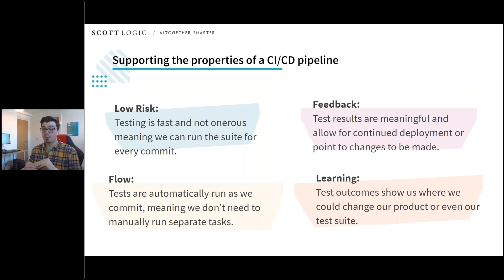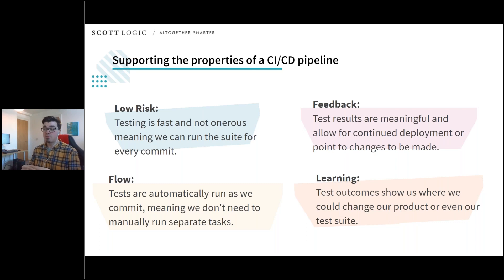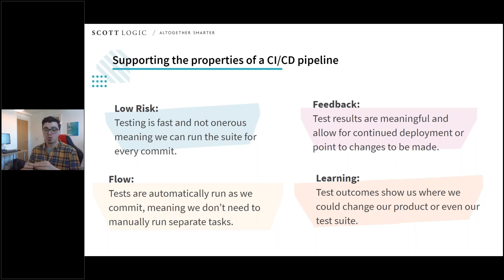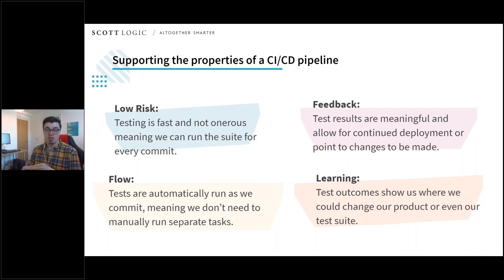The ways that continuous testing supports the CI/CD pipeline: for low risk, having fast and automated tests means we're happier to make more changes rather than trying to batch them up, and those smaller changes are less risky to implement. Continuous testing provides faster feedback, giving meaningful point-in-time information about our build so we know when to act. It also keeps up our development flow — there are no extra steps to check for regression, and fast feedback loops mean information is timely and relevant, freeing us up to work on other things. Finally, having strong tests in place gives us a safe, low-risk environment in which to try out ideas and experiment. We can do A/B testing, knowing that our tests will catch failure as a result of any changes made.